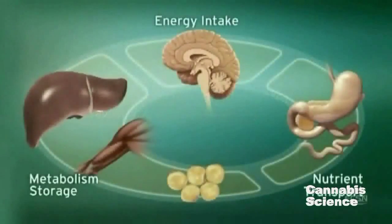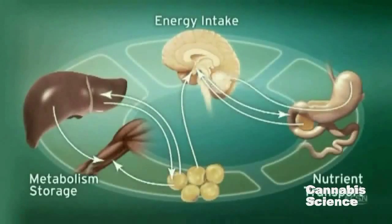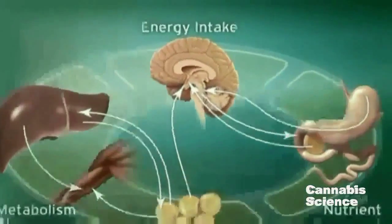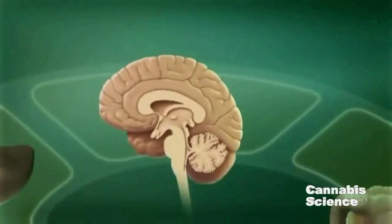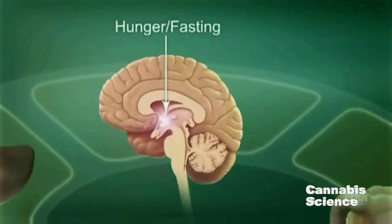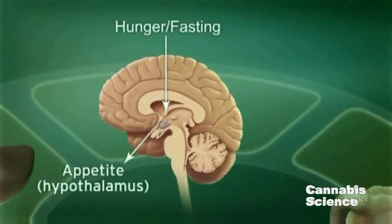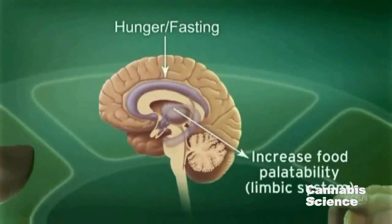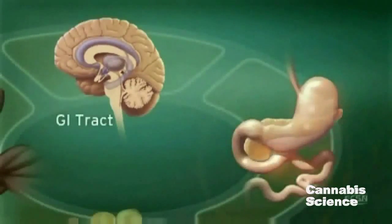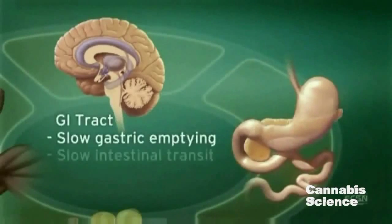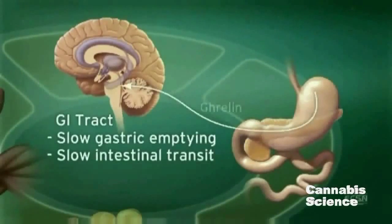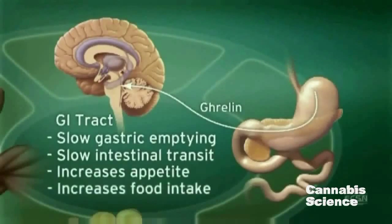Endocannabinoid system activity in the central nervous system regulates food intake. ECS stimulation by hunger and fasting signals stimulates appetite and increases the palatability of food. Endocannabinoids slow gastric emptying and GI transit and appear to stimulate secretion of ghrelin, a neuropeptide that increases appetite and food intake.